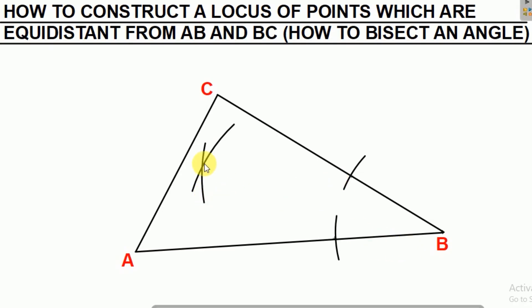These two arcs are cutting each other at a point. We're going to draw a line that starts from point B and passes through the point where the two arcs intersect. That means we have drawn a locus of points which are equidistant from AB and BC, or we have bisected our angle at B.